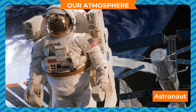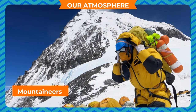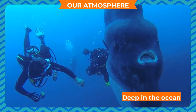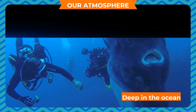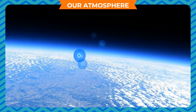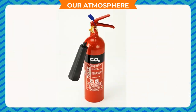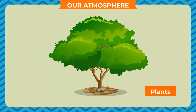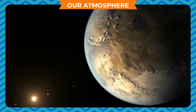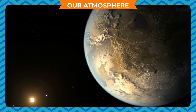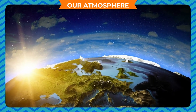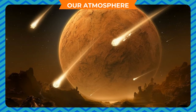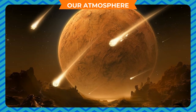That is why astronauts and mountaineers carry oxygen cylinders with them for breathing. Similarly, deep in the ocean too, oxygen is less. The oxygen in the atmosphere supports all life forms. The atmosphere contains carbon dioxide gas which helps plants to make their food. The atmosphere protects the earth from the harsh light and heat of the Sun — it acts as an insulating layer and regulates the heat that enters the earth. It also protects us from falling meteors.